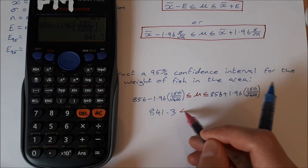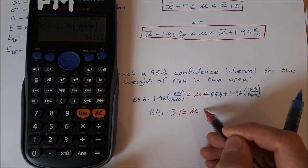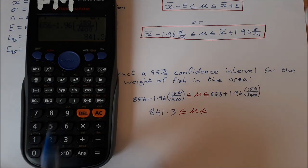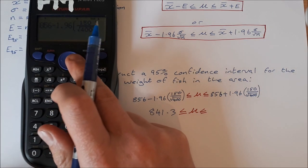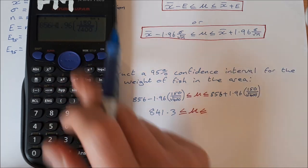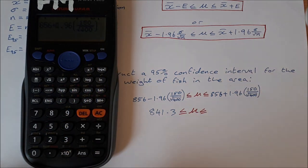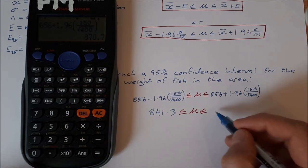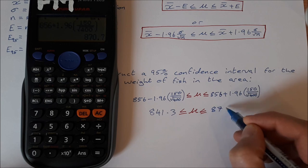So 841.3 less than or equal to μ less than or equal to... Now to get the opposite side, I don't need to go typing it all in again. I can just scroll through using my arrows, delete my minus and put in a plus, then press equals, and we get 870.7.